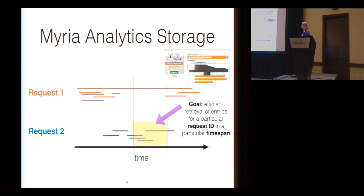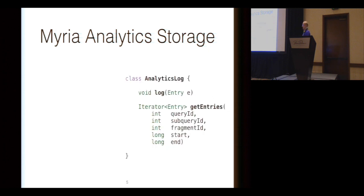The interface for the data structure they need looks a bit like this. There's one method to log data structure, and another method, get entries, that takes a couple of parameters related to the data structure and a start and end time, and returns to you an iterator that you can work with, yielding the analytics entries associated with that particular request and time span.